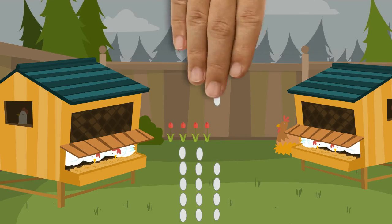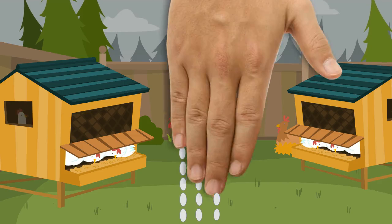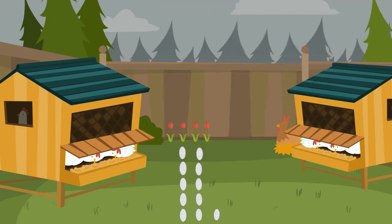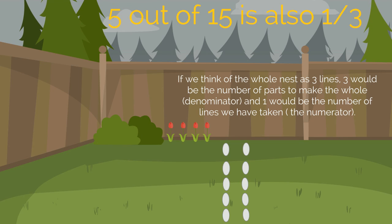If we take 5 out of 15 eggs, it is also 1/3. Because if we think of the whole nest as 3 lines, 3 would be the number of parts to make the whole, the denominator. And 1 would be the number of lines we have taken, the numerator.